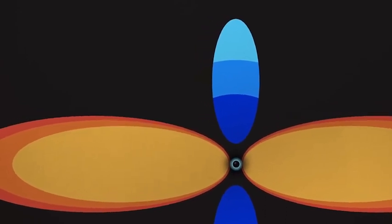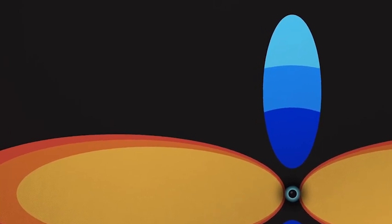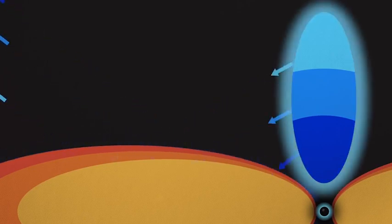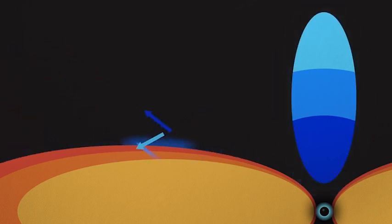This outburst provides an opportunity for us to study how both the disk and the corona change as the black hole consumes this material. Waves of X-rays from the corona echo off the accretion disk like the sonar we use to explore the ocean floor. These echoes tell us about the size and shape of the disk and corona.